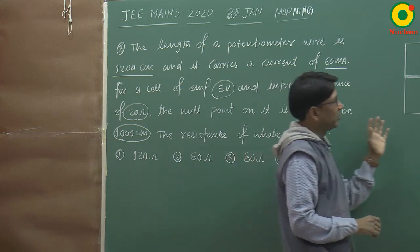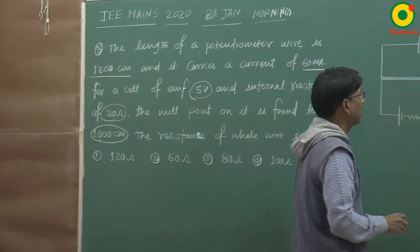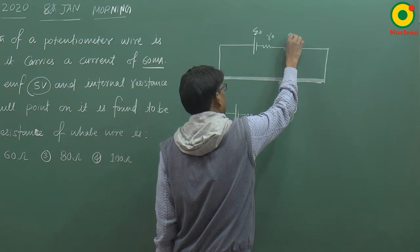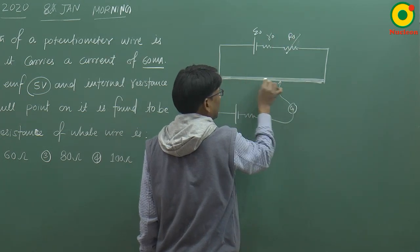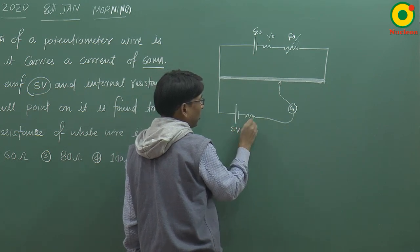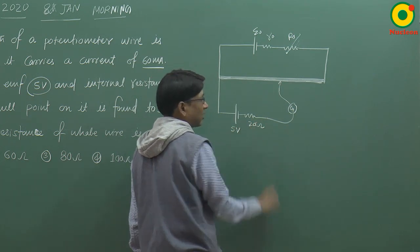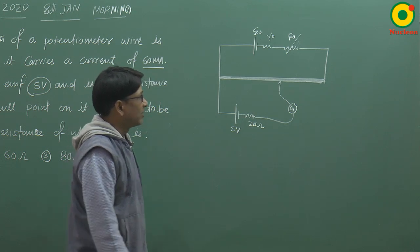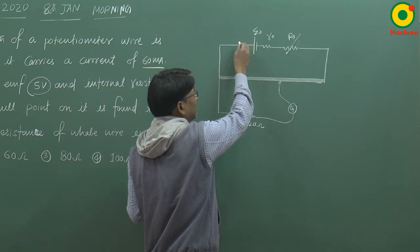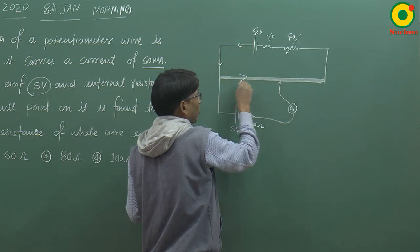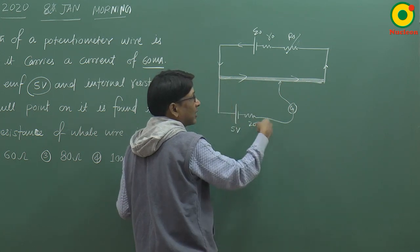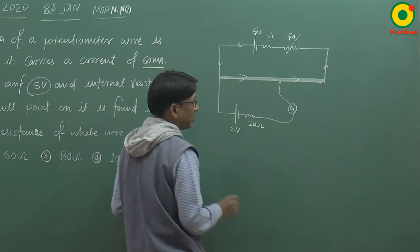Potentiometer में यह primary circuit होता है। यह Potentiometer wire है और यह battery लगाया गया 5 volt का, और 20 ohm इसका internal resistance है। जब balance point आता है, तो यहां से current 0 हो जाता है। यहां से current flow करता है इस circuit में, लेकिन balance state में इधर से current नहीं जाएगा — इसमें deflection हो जाता है 0।